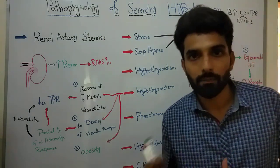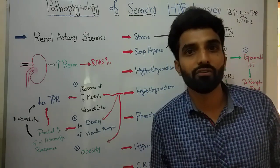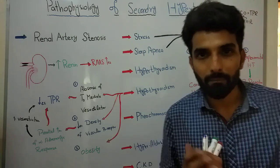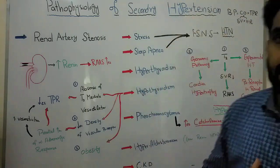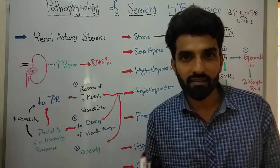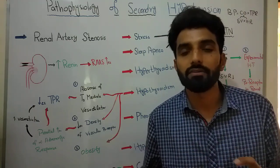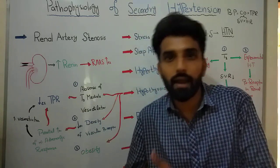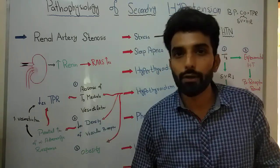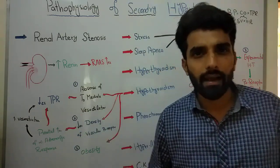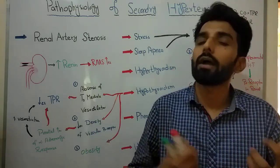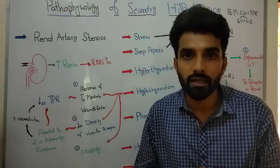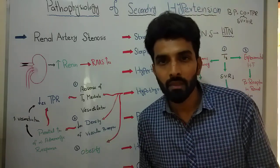Welcome back. In the previous lecture we were talking about the pathophysiology of primary hypertension. Now let's talk about the pathophysiology of secondary hypertension. Secondary hypertension is basically a type of hypertension in which there is a secondary disease or condition that is ultimately leading toward the hypertension, and that secondary condition may be of kidney, may be of thyroid, or may be some neurological condition that can ultimately increase blood pressure.